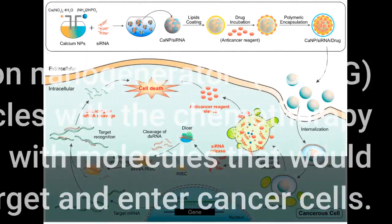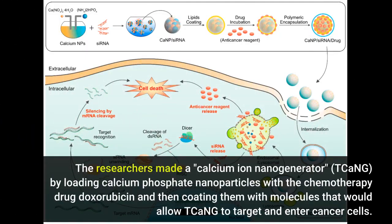The researchers made a calcium ion nanogenerator, TCANG, by loading calcium phosphate nanoparticles with the chemotherapy drug doxorubicin and then coating them with molecules that would allow TCANG to target and enter cancer cells.